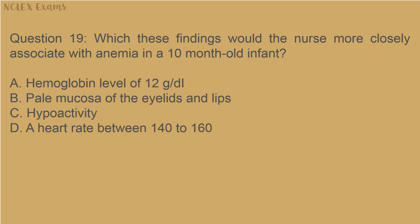Question 19: Which of these findings would the nurse more closely associate with anemia in a 10-month-old infant? A) Hemoglobin level of 12 grams/dL; B) pale mucosa of the eyelids and lips; C) hypoactivity; D) a heart rate between 140 to 160.